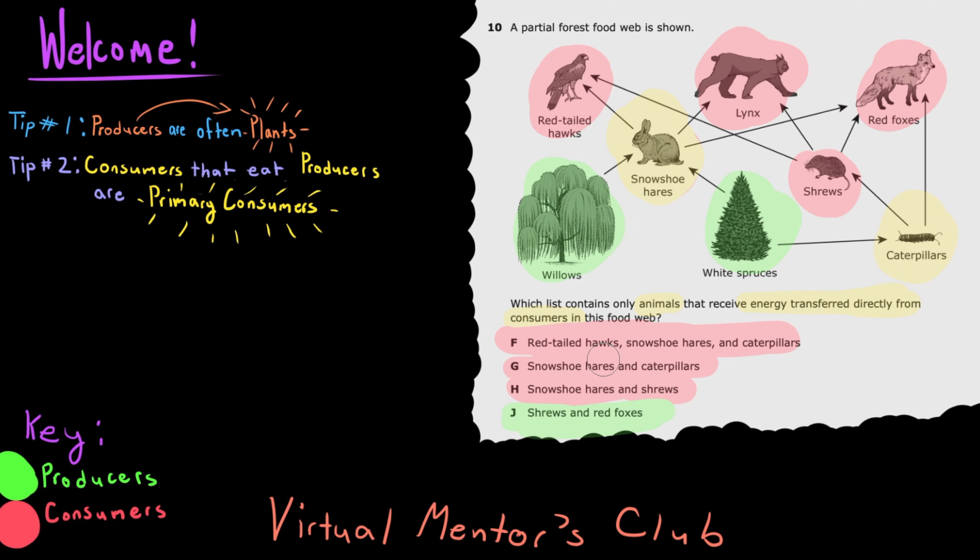If you want to double check, check the food web if red foxes and shrews prey upon producers, such as the willows and white spruces, and then check if they prey on other consumers. Since the red fox does not eat producers but does eat snowshoe hares, shrews, and caterpillars, all of which are consumers, and since shrews do not eat any producers but eat caterpillars, we know that option J is for sure correct.